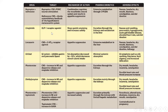Finally, liraglutide is a glucagon-like peptide-1 receptor agonist that works by slowing gastric emptying time and increasing satiety. It causes certain side effects that are mostly gastrointestinal. This concludes the lecture. If you have any questions or concerns, please let me know in the comments. Thank you very much.